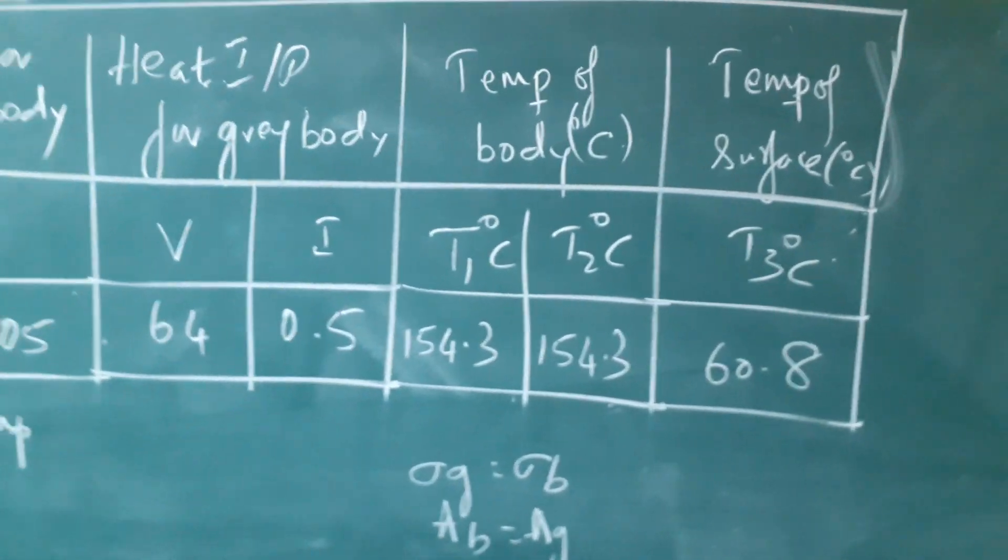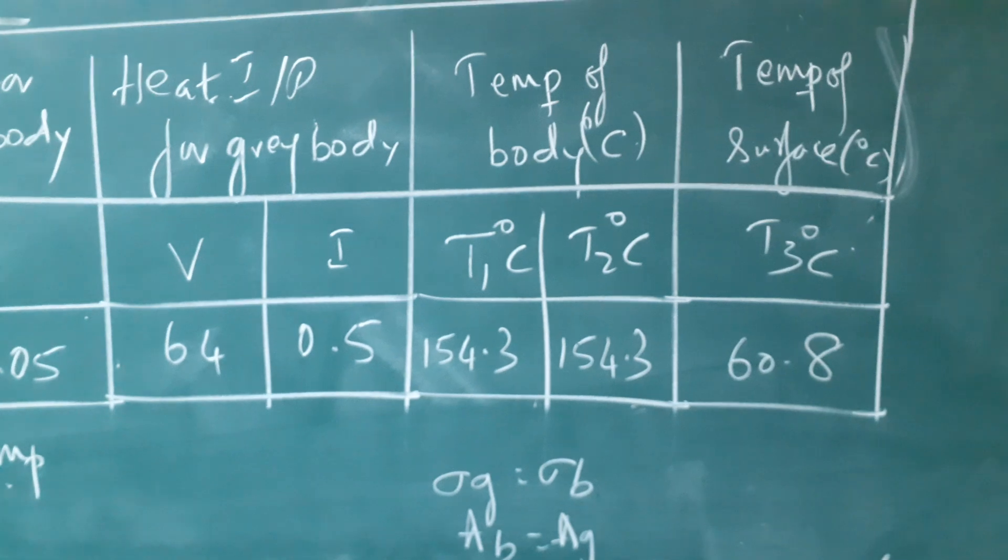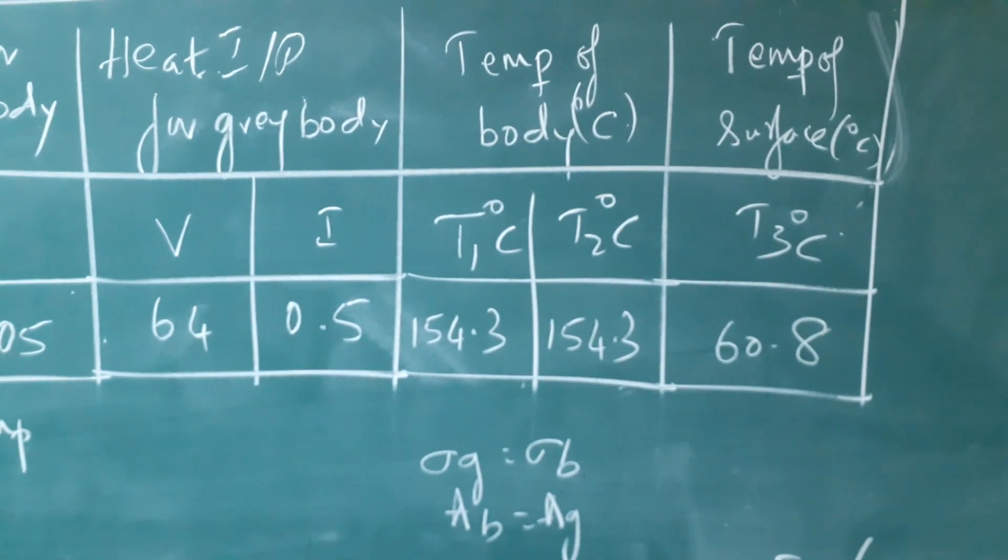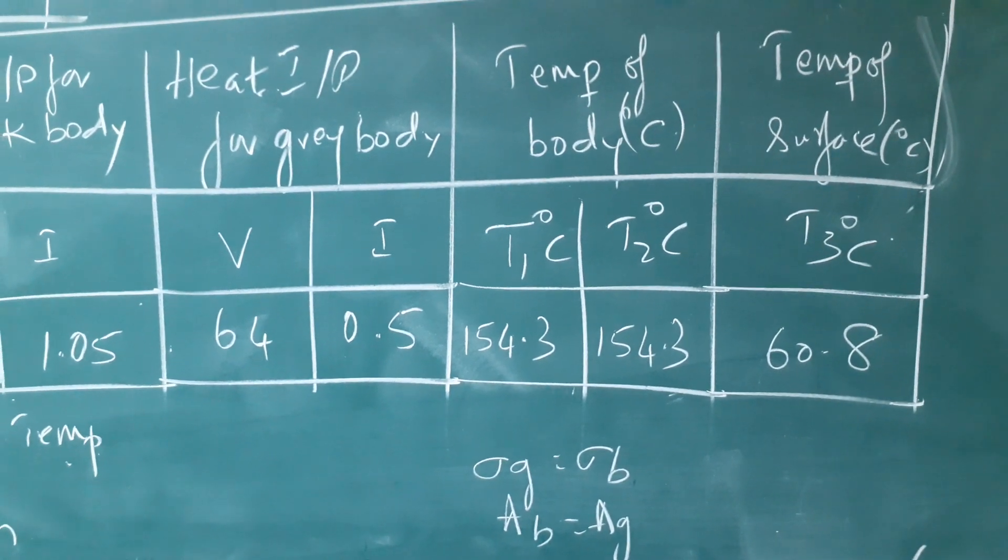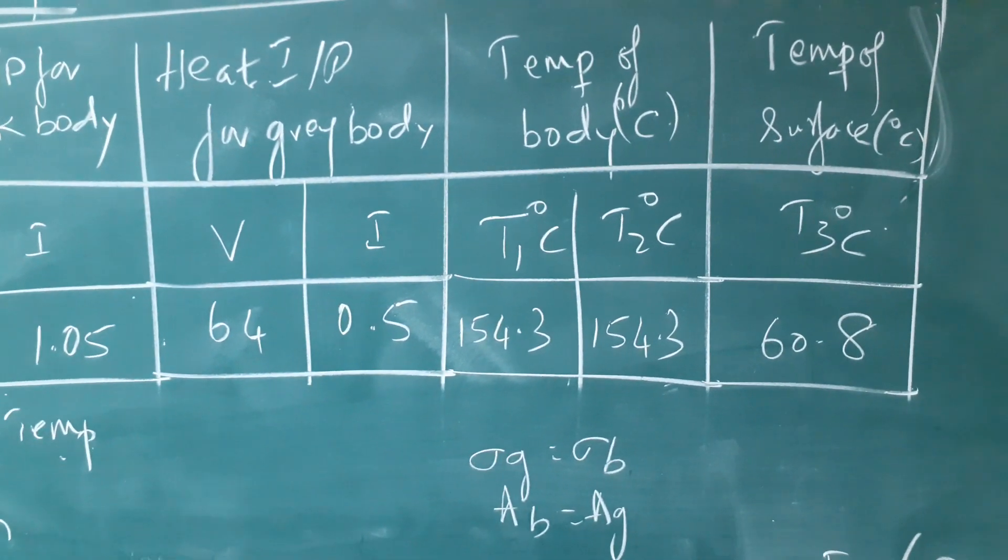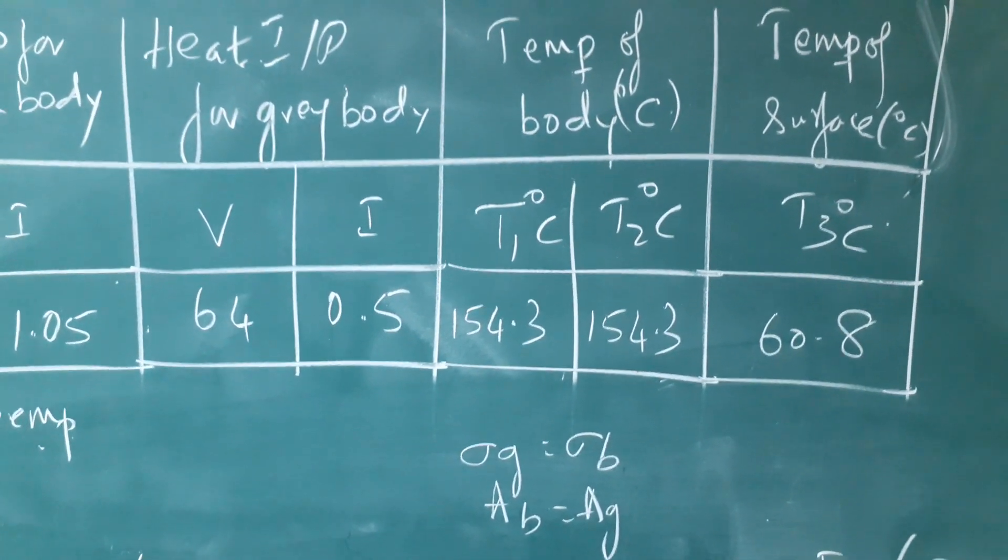Temperature of the body, T1 is 154.3, T2 is 154.3. So you might ask the question, why T1 is equal to T2? Yes, that is what we did. We made the temperature of black body equal to temperature of gray body. Okay, so that is why T1 and T2 will be equal.